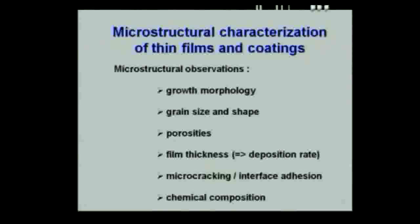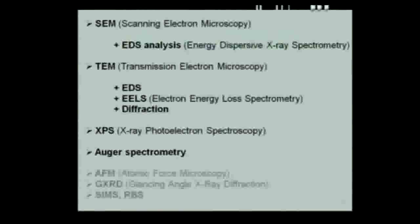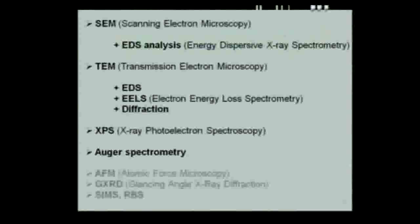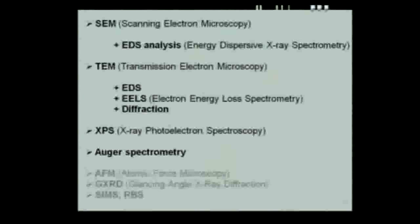For microstructural characterization, you can use different techniques. For the thickest coatings, you can use SEM with EDS analysis, but you cannot analyze phases with a size lower than about one cubic micrometer. You can also use TEM, which is quite dedicated for thin films and coatings, allowing chemical analysis using EDS, EELS, or diffraction. For surface analysis, you can use XPS — X-ray photoelectron spectroscopy — Auger spectrometry, and you can measure surface roughness using atomic force microscopy.